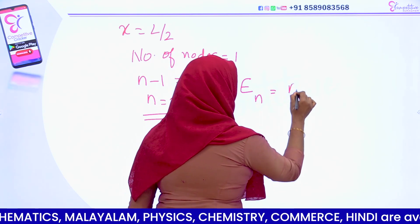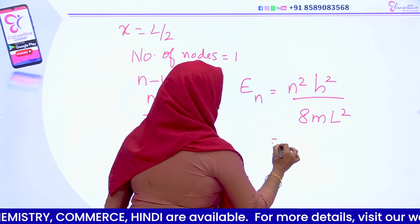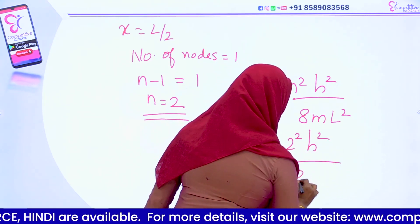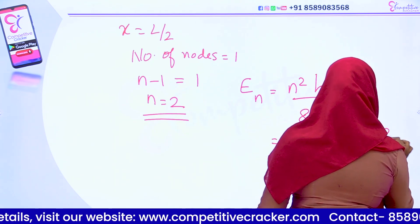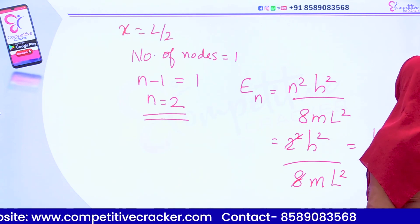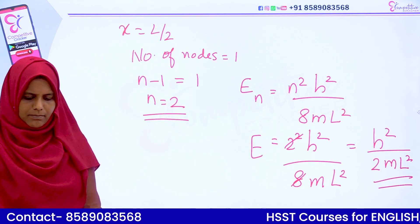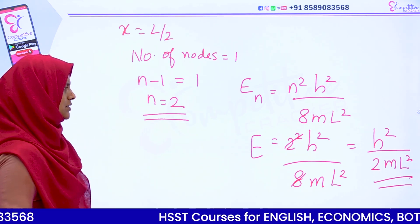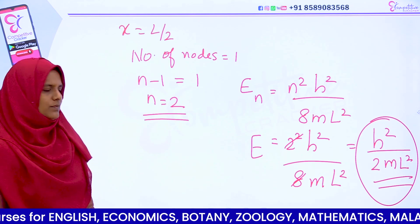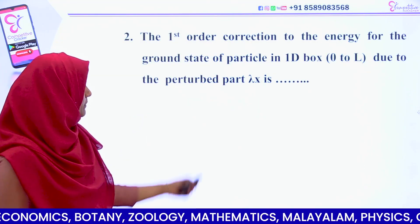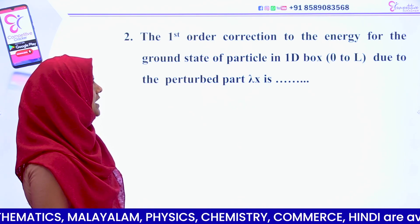The energy of the nth level is n² h² divided by 8mL². Substituting n equal to two gives 2² h² divided by 8mL², which simplifies to 4h² divided by 8mL², equal to h² divided by 2mL². So the exact energy value is h²/2mL².